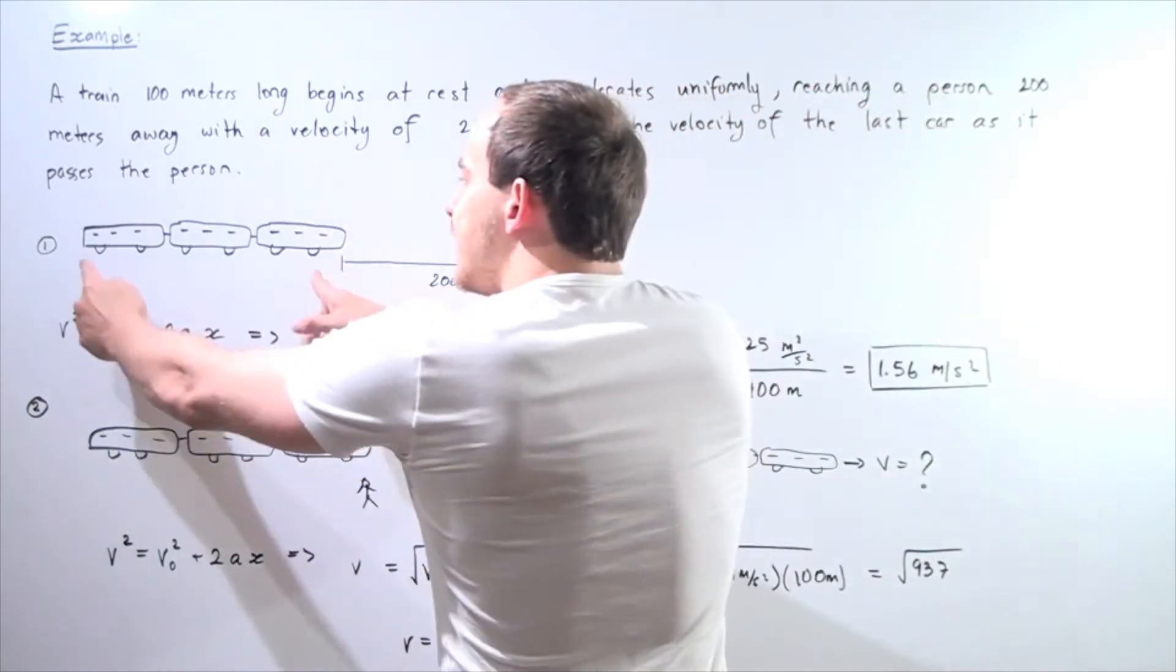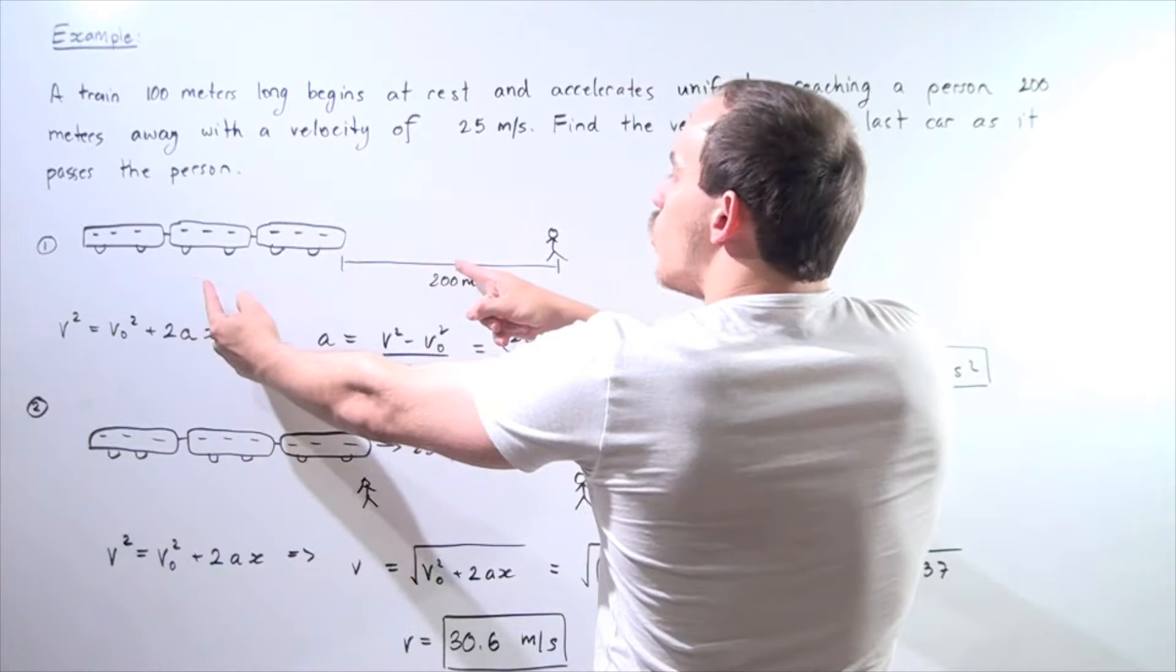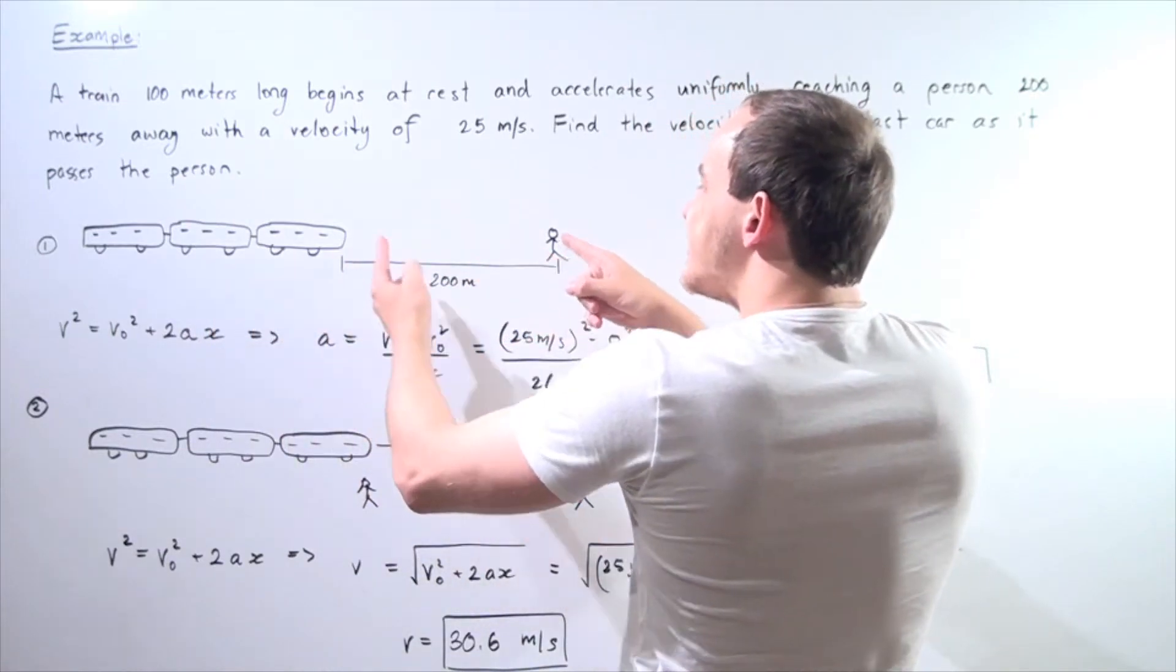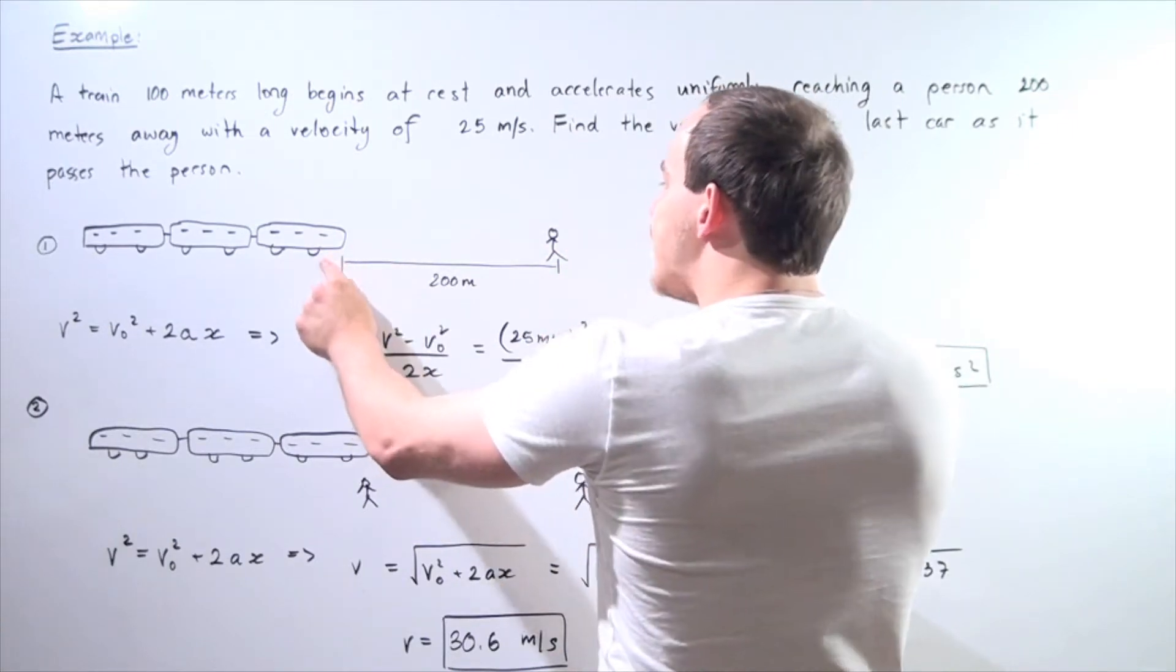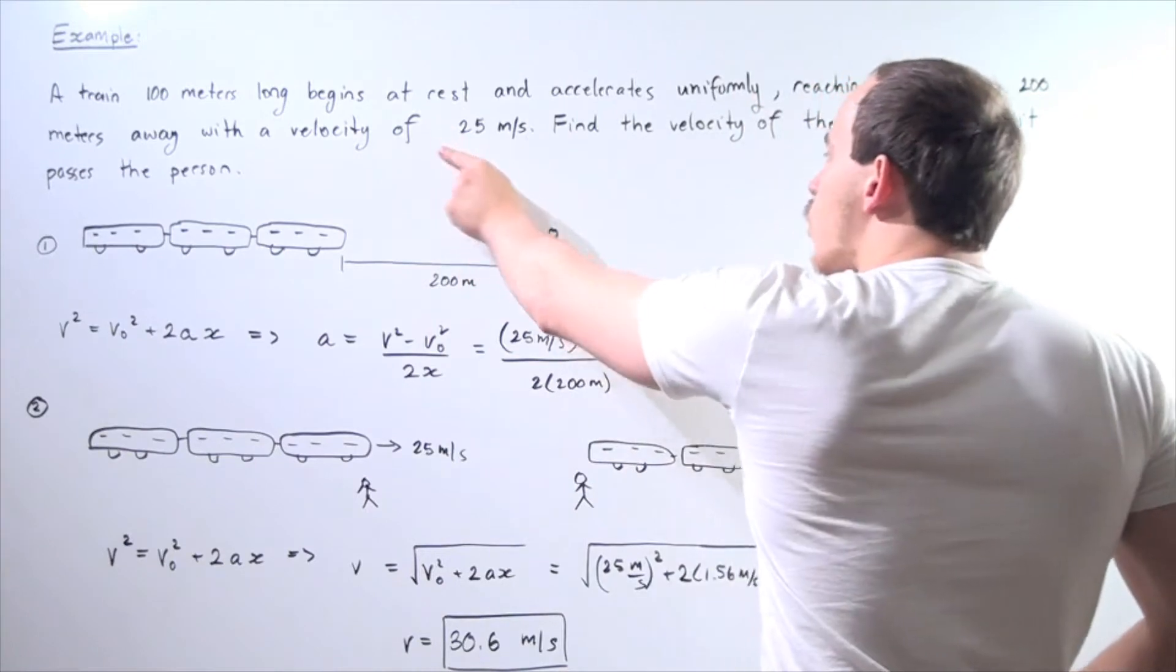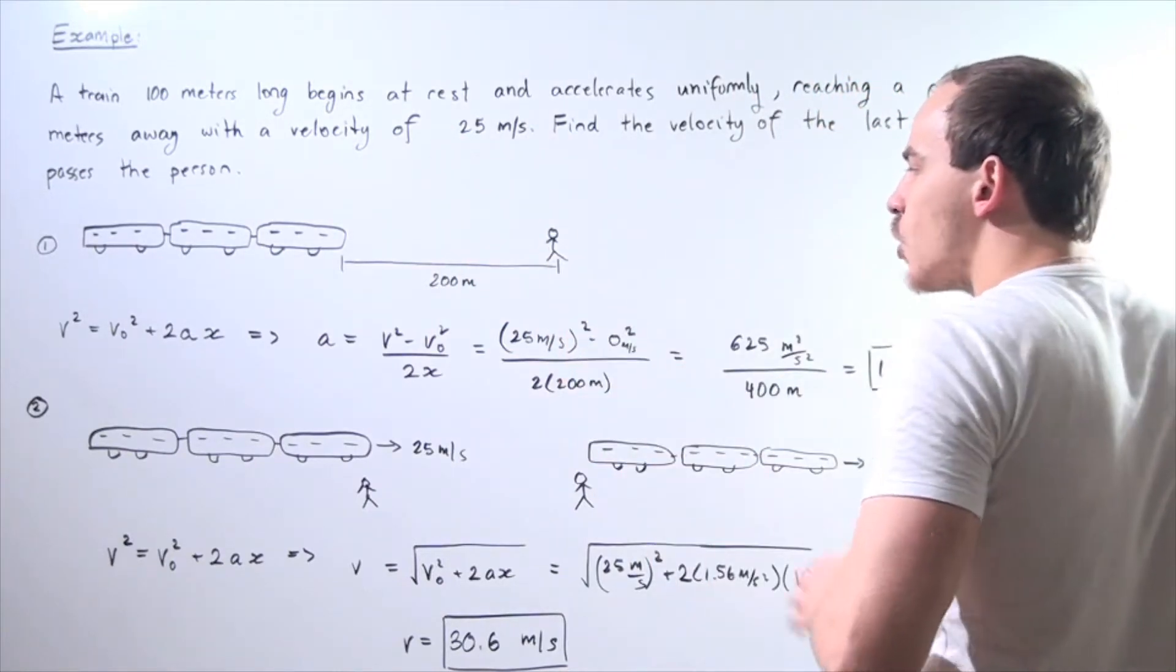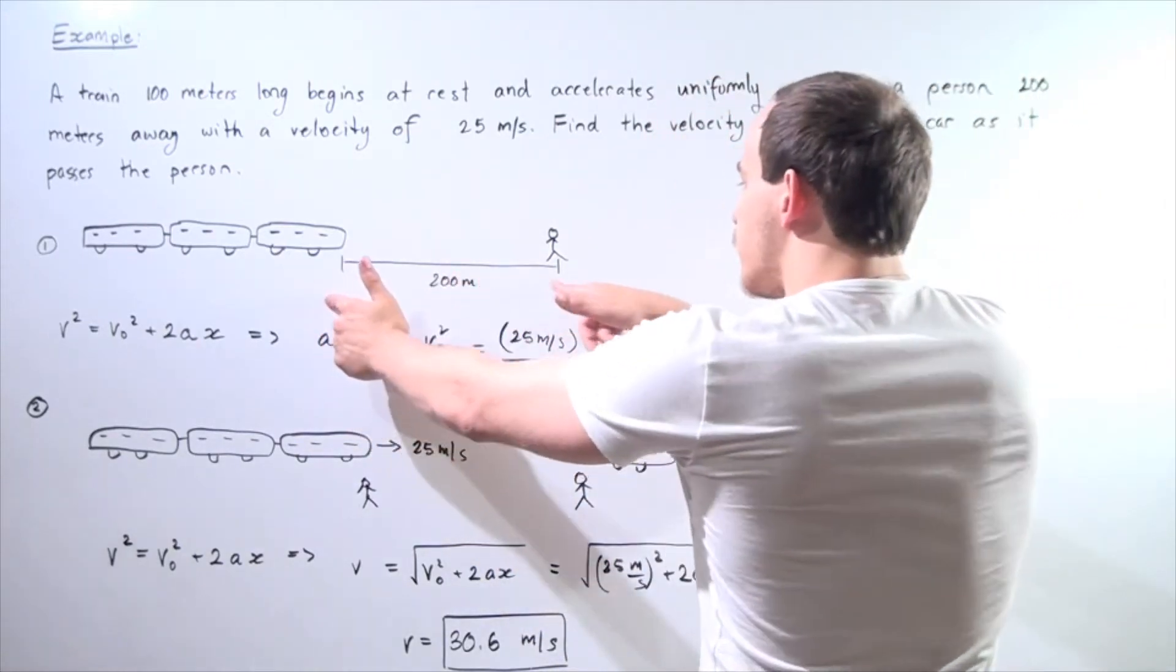Now the train begins at rest and begins to accelerate uniformly with some unknown acceleration until it reaches this person. At the point when the front of the train reaches our person, the train is traveling at 25 meters per second. So we want to find what our acceleration is during this period.